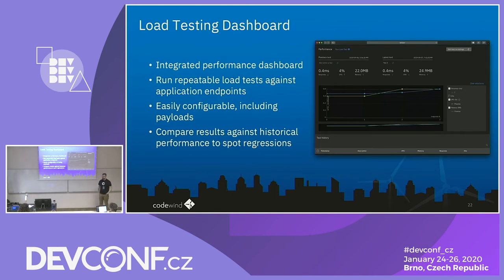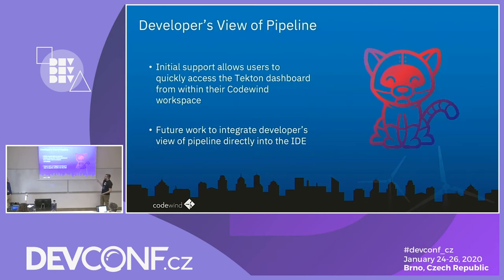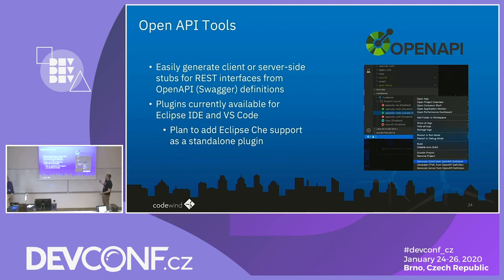We also have an integrated load testing dashboard — you can run repeatable load tests against your application endpoints, it's easily configurable including payloads, and you can compare results against historical performance to spot regressions. We also have an integration point with Tekton — if you have the Tekton dashboard installed on your cluster, Codewind can detect that and you can open it from Codewind on Che to deploy your applications through Tekton once you're finished iterating. We do have a future plan to integrate the developer's view of the pipeline directly into the IDE. We also have OpenAPI tools to easily generate client or server-side stubs for REST interfaces from OpenAPI definitions, currently for Eclipse IDE and VS Code, with plans for a standalone Eclipse Che plugin.